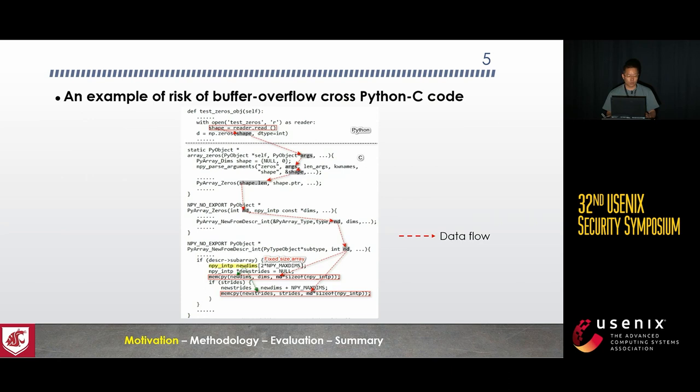This is an example. This figure shows a risk of buffer overflow across Python, C code, and a native Python extension. This issue is mainly induced by the cross-language information flow. When a Python API call is made, the corresponding C function is invoked, and the shift value is propagated along the data flow, eventually reaching a memory copy operation. A buffer overflow can happen on the fixed-size stack buffer when the shift length is larger than expected.